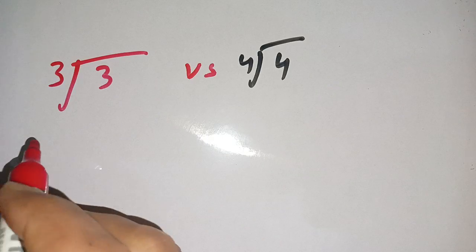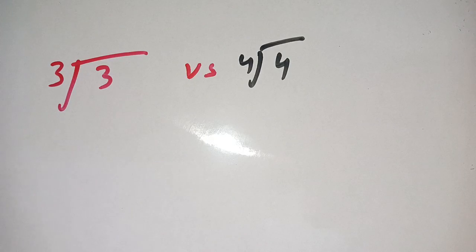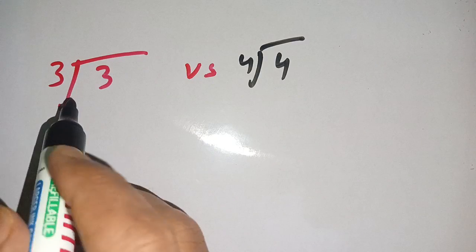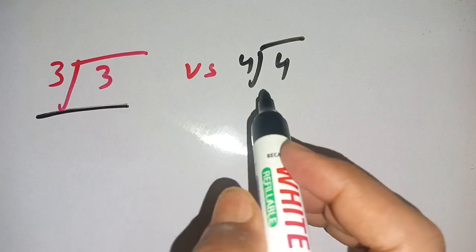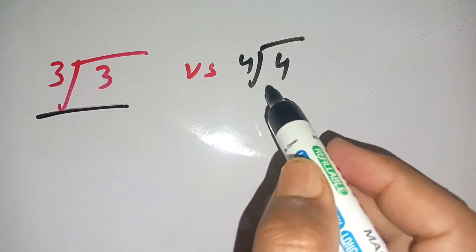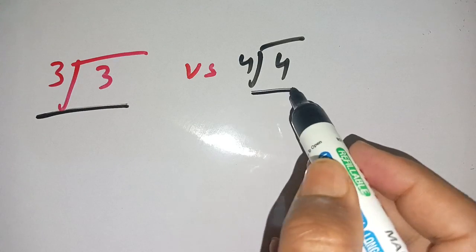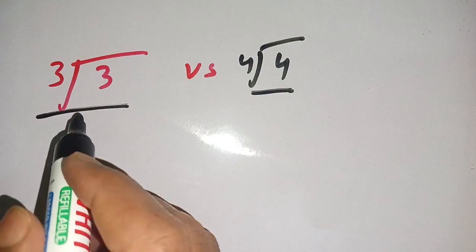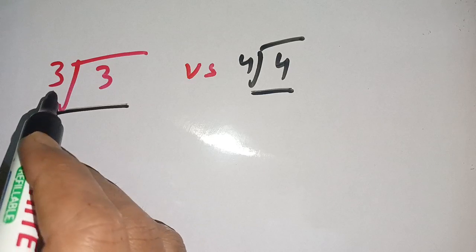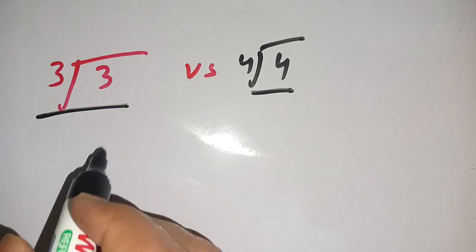In today's video, we are going to compare these two numbers. The first number is the cube root of three, and the second number is the fourth root of four. Let us solve this.